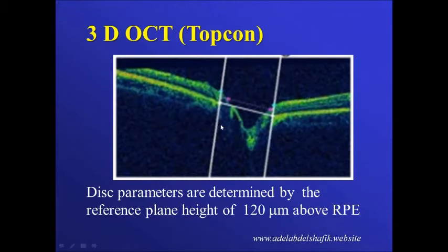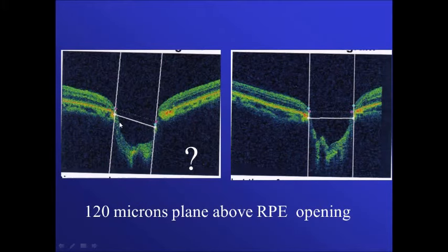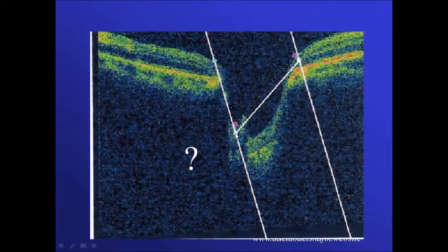In the TOPCON machine, after identifying where Bruch's membrane ends, a reference plane 120 microns higher marks the location of the neural tissue. In this example, the machine calculated the end of Bruch's membrane at an incorrect location — flagging it as abnormal — and so all the measurements were abnormal, when the correct boundary was elsewhere.